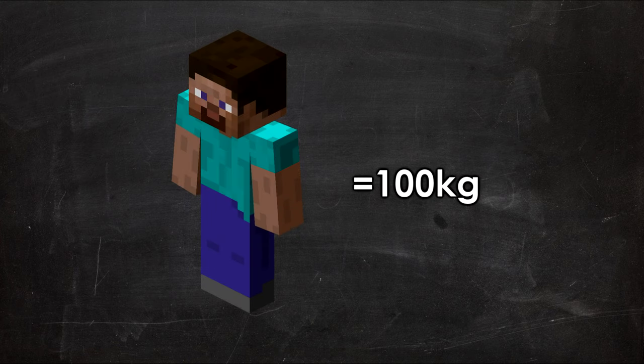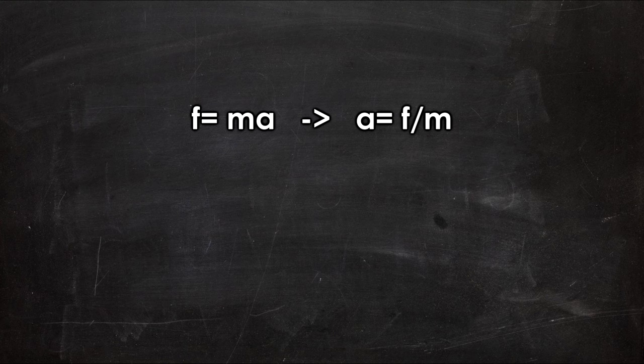To do this, we need to do every step we just did backwards, now using 100 kilograms. First, we find the acceleration by converting the equation F equals MA into A equals F over M using the new mass of 100 kilograms.